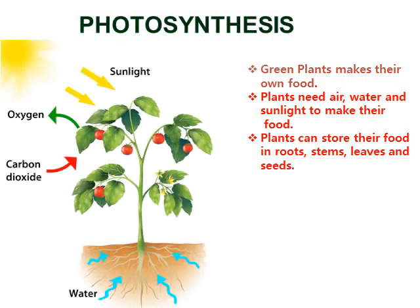Photosynthesis: Green plants make their own food. Plants need sunlight, air and water for making their own food. This process is called photosynthesis. Some plants store extra food in their roots, stems, leaves, fruits and seeds.